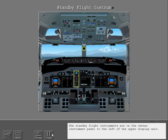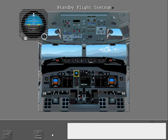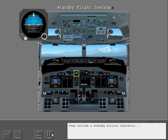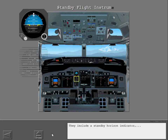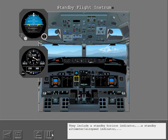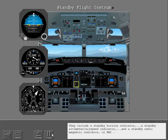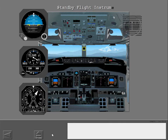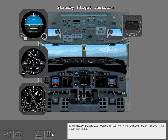The standby flight instruments are on the center instrument panel to the left of the upper display unit. They include a standby horizon indicator, a standby altimeter airspeed indicator, and a standby radio magnetic indicator, or RMI. A standby magnetic compass is on the center post above the light shield.